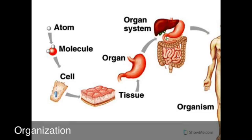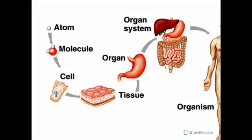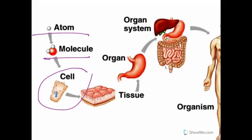Living things are also very organized — organization is one of our characteristics of life. When we look at how living things are organized, we start at the very bottom with the basic functional unit of matter, which is the atom. When you have a lot of atoms put together, you can get molecules. Atoms and molecules are not living things — those are more things that chemists and physicists study. When you get up to the level of the cell, with lots of molecules and organelles put together, that's our very basic unit of life.